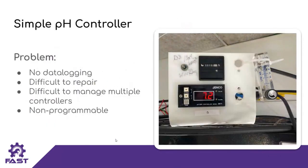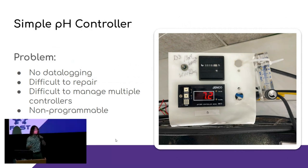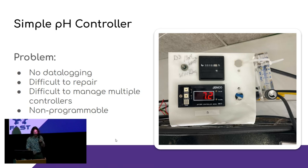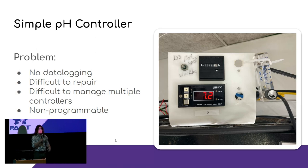I want to introduce a problem I've encountered. A company I'm working with to install BREAD uses a pretty archaic pH controller to control the CO2 in their seaweed growth tanks. They inject carbon dioxide into the airlines to lower the pH. But there are a lot of issues with this logger they have currently. Mainly, it has no data logging and sometimes fails, so they have no idea when it failed or how they could fix it. It's also difficult to repair, and because it's non-programmable, it's difficult to manage multiple controllers if you have a fleet of these in a warehouse.